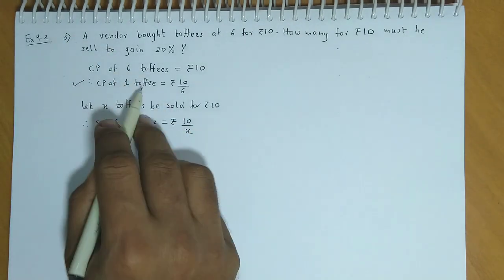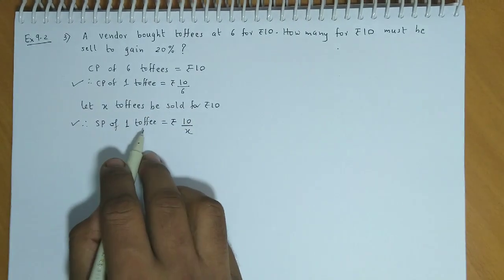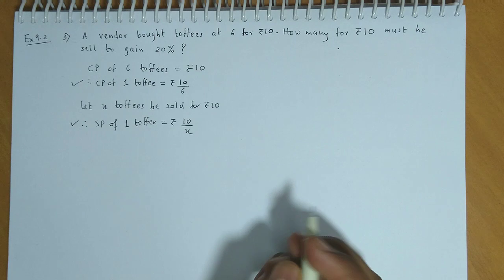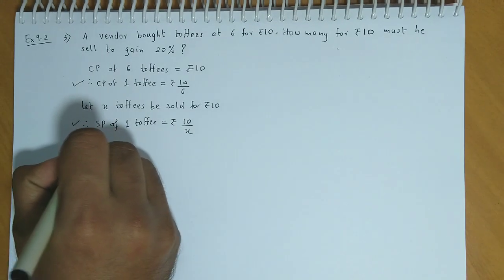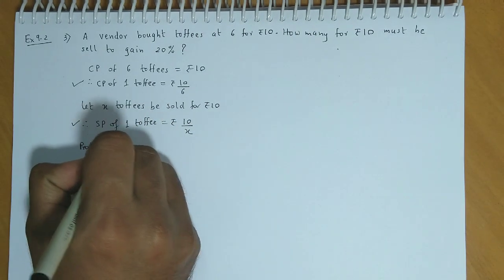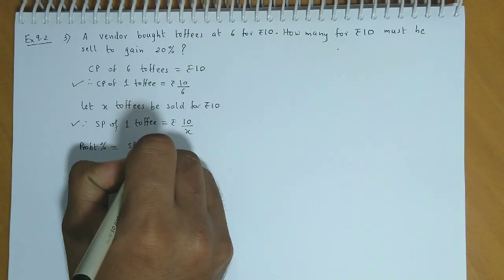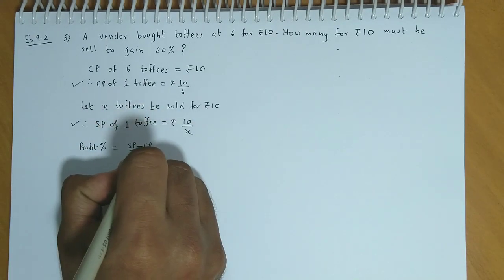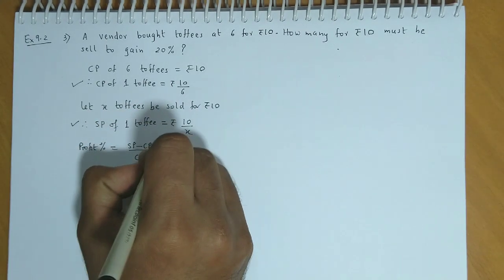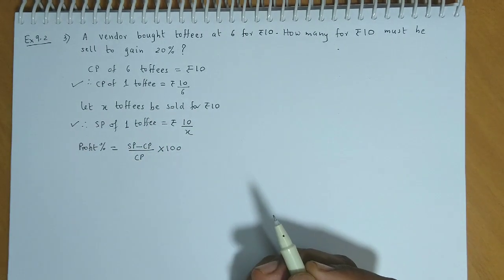Cost price of 1 toffee is 10 by 6. Selling price of 1 toffee is 10 by X. Profit percentage is 20. We know that profit percentage is selling price minus cost price upon cost price into 100.